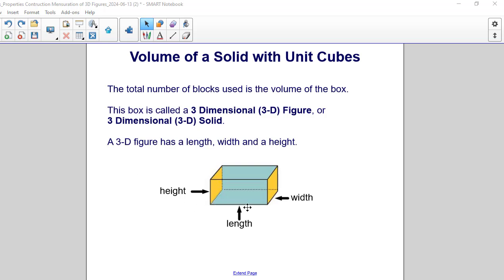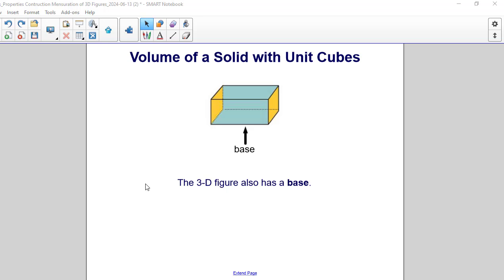So we refer to the length going across, the width goes back, and the height is the measurement going up. A 3D figure also has a base. The rectangle on the bottom here is referred to as the base of this prism. I want to point out that the base has a measurement of a length and a width.